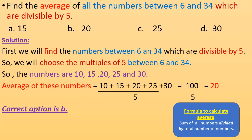Find the average of all numbers between 6 and 34 which are divisible by 5. The multiples of 5 between 6 and 34 are: 10, 15, 20, 25, and 30. The average equals (10 plus 15 plus 20 plus 25 plus 30) divided by 5, which equals 100 divided by 5 equals 20. The formula for average is the sum of all numbers divided by the total count. The correct option is B.